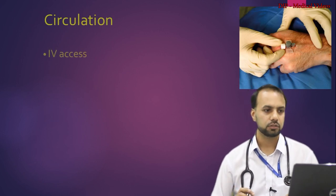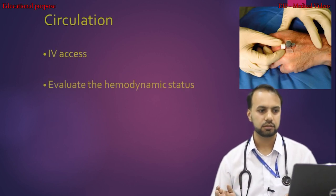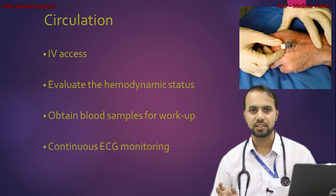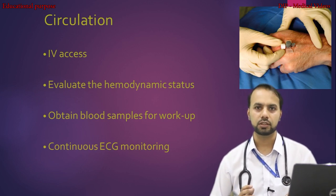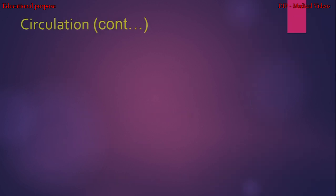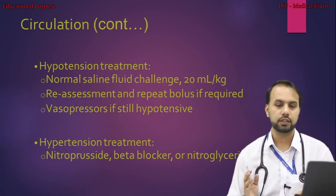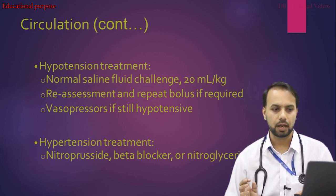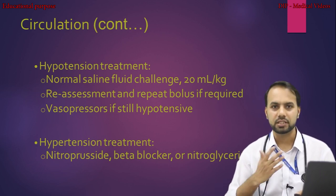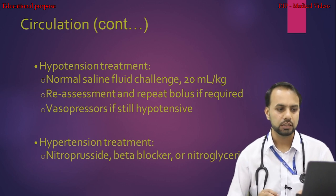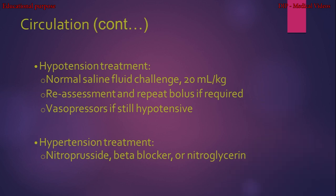For circulation, establish IV access first. Evaluate the hemodynamic status, obtain blood samples for workup, and perform continuous ECG monitoring. Certain poisons can cause cardiac arrhythmia and heart blocks — assess and treat accordingly. For hypotension, challenge with crystalloid normal saline at 20 mL/kg bolus, reassess, and repeat as required. Add vasopressors if still hypotensive. For hypertension secondary to poisoning, drugs like nitroprusside, beta blockers, and nitroglycerin can help.